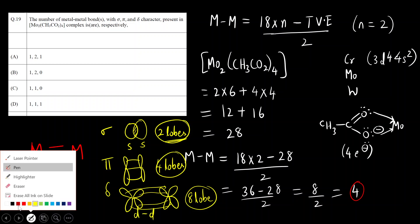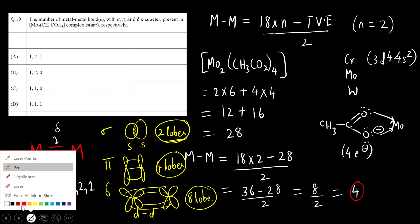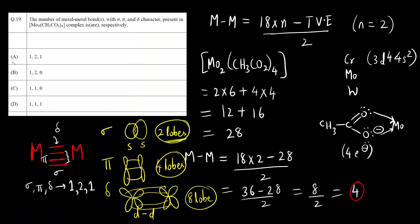So in this multiple bond, if you see, 1 is sigma bond. Then the remaining 2 are pi bonds. And this is the delta bond. They have asked sigma, pi and delta respectively. So sigma is 1 sigma bond and 2 pi bonds and then 1 delta bond. So the correct answer will be 1 comma 2 comma 1. The correct answer is option A.